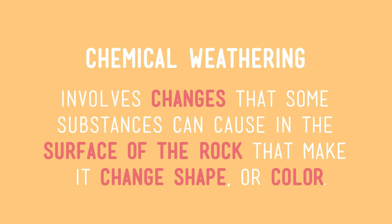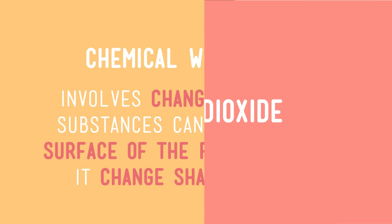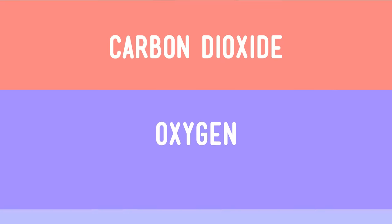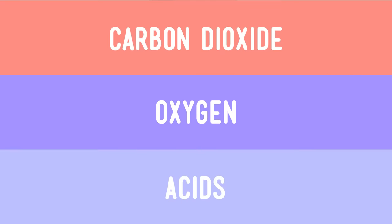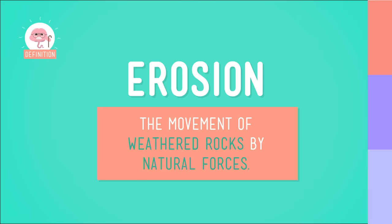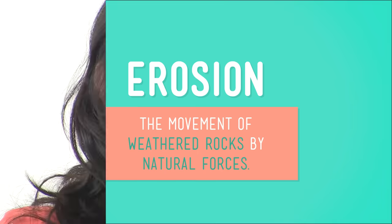Chemical weathering involves the changes that some substances can cause in the surface of the rock, that make it change shape or color. Things like carbon dioxide, oxygen, and acids can all cause chemical weathering. And when rocks have been weathered and broken down and are later moved by natural forces like wind, water, or ice, that's called erosion.